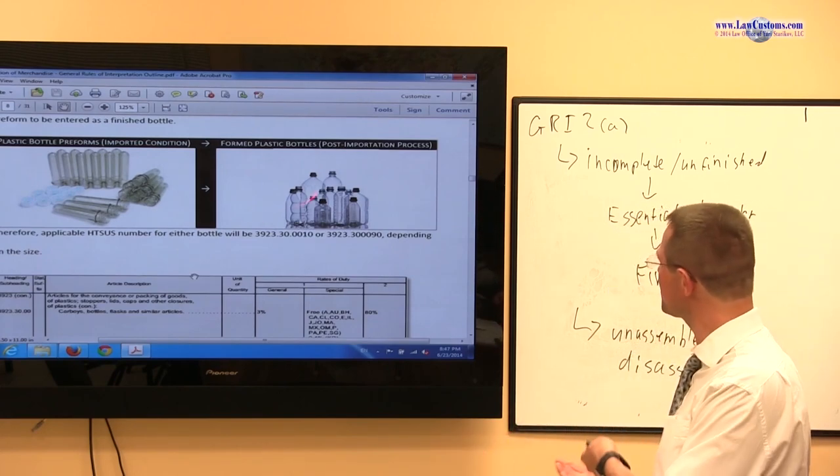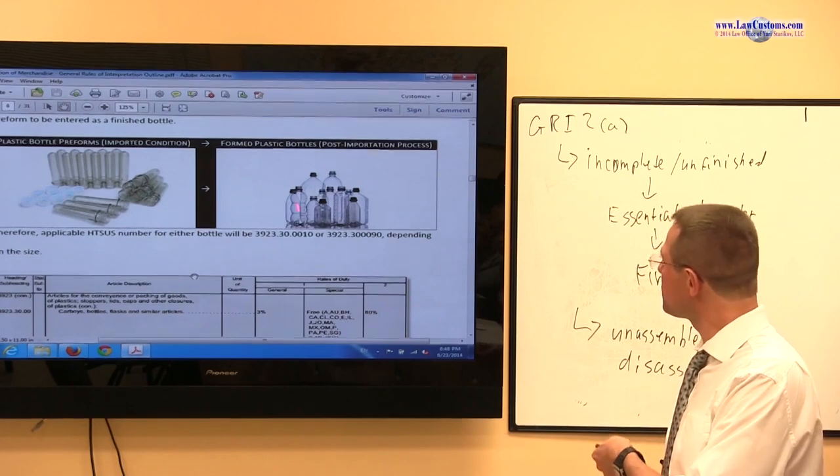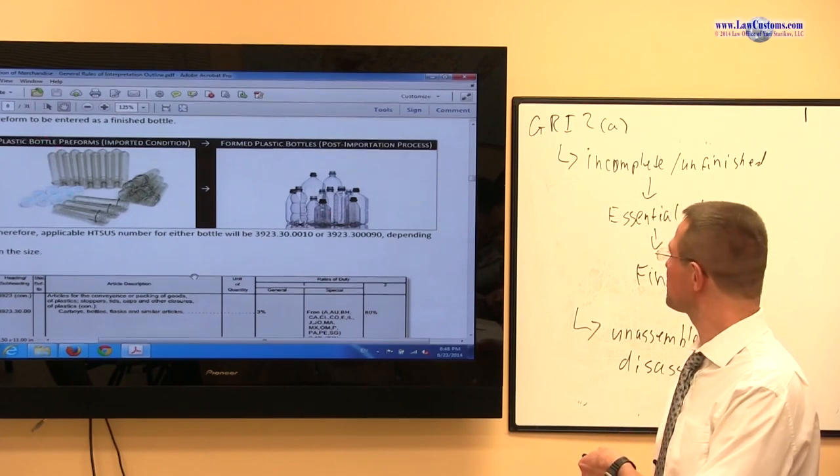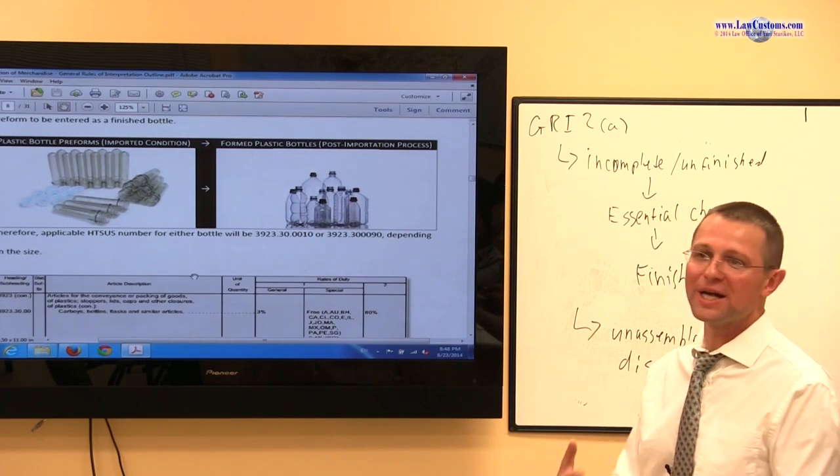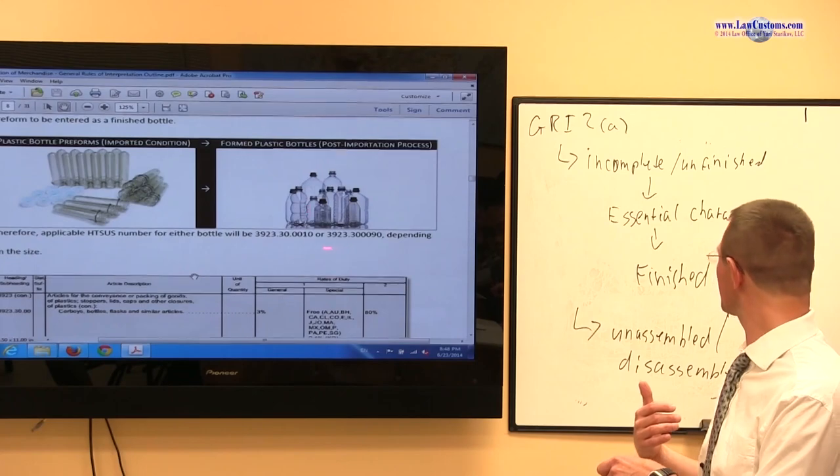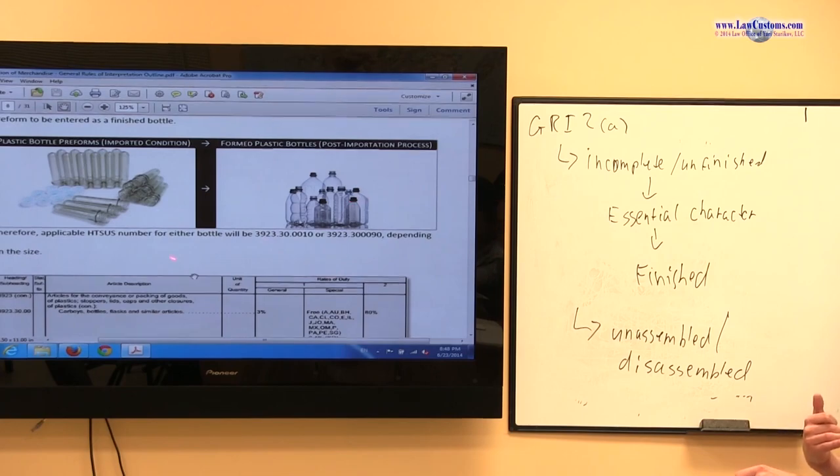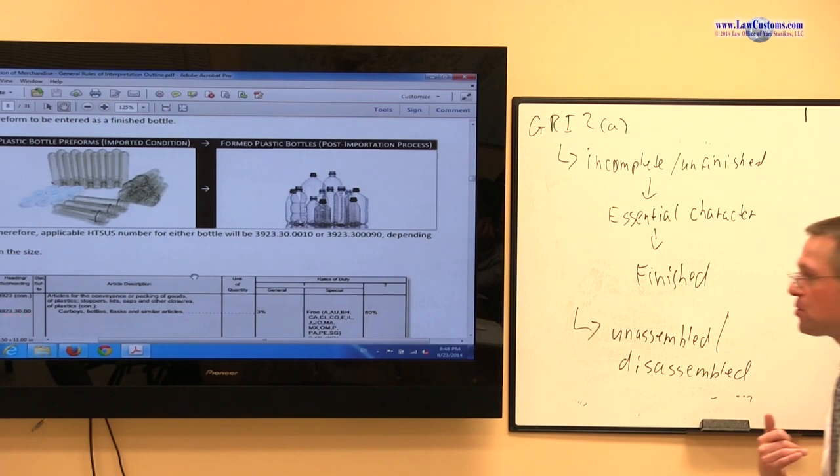So what would you make a choice? Well, the choice is this. Essentially, the bottle preform is the bottle except it's in the early stage. So because it has essential character of this, even though it is subject to the manufacturing process, it will take that shape. So essential character of this is really manifested by this product, the end product. So that means you can classify it as, even though it's unfinished, you can classify it as a finished product, which provides for the carboy, bottles, flasks and similar articles under 3923.30.00.